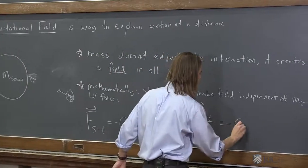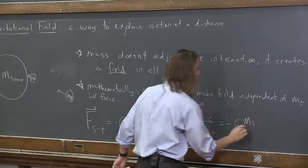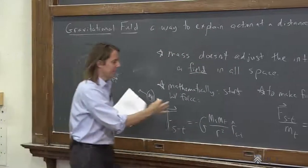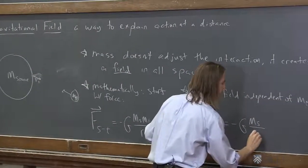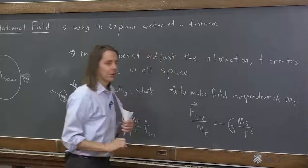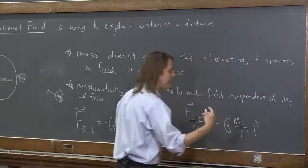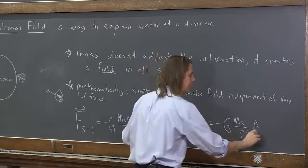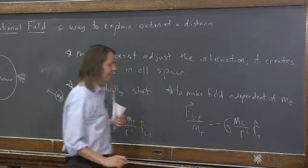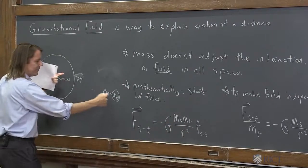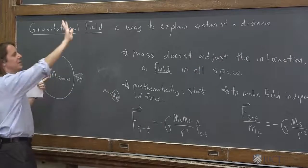It's equal to minus big G. The magnitude of the source's mass will affect the field. The field will depend on how far away you are, R squared. The field will still point radially inward, and here I'm going to put just S. It's no longer a unit vector on the axis between T and S. It's now just any direction.